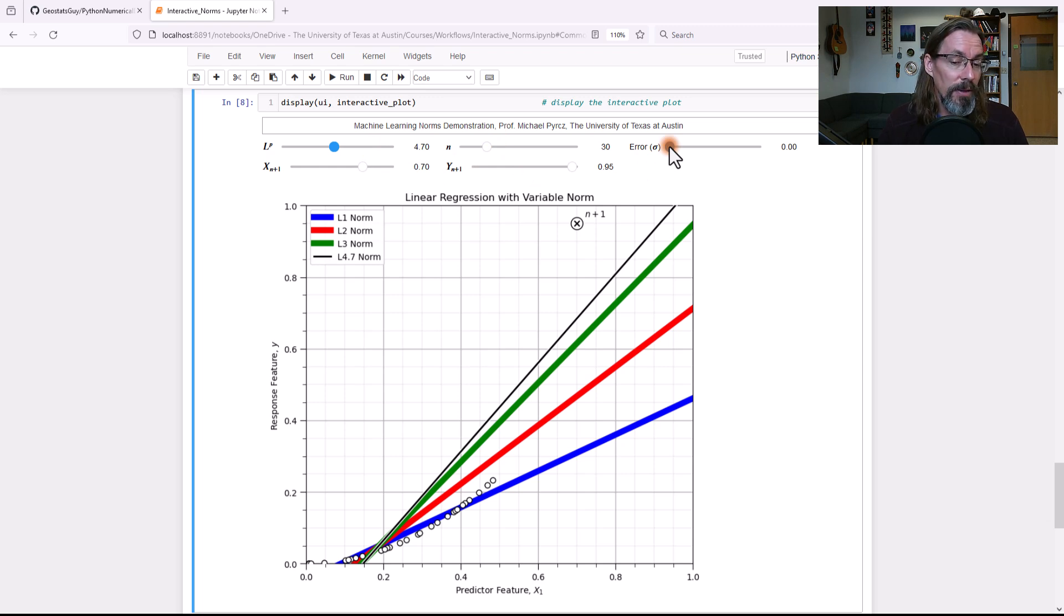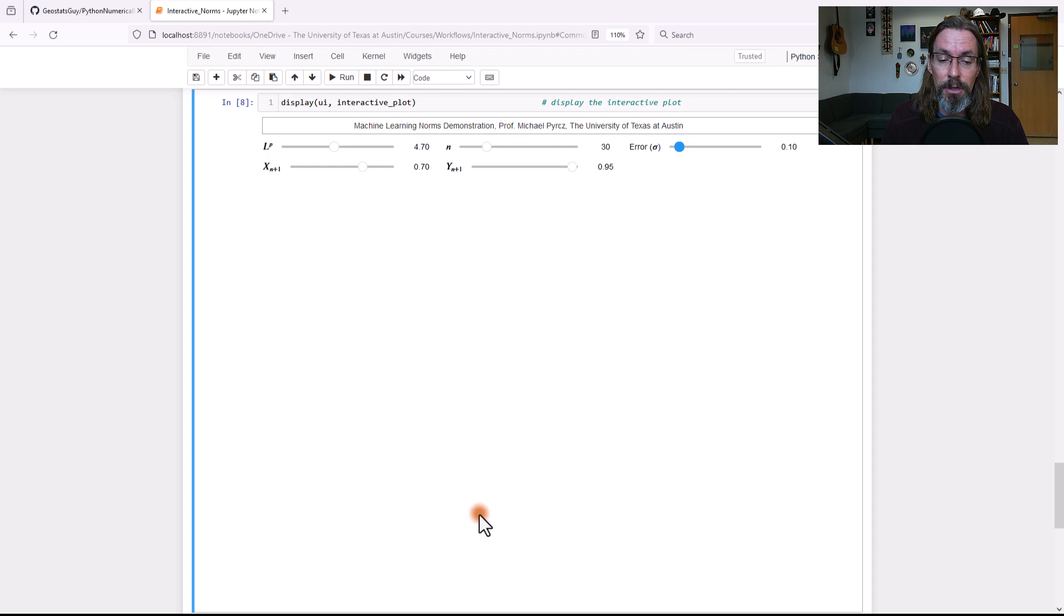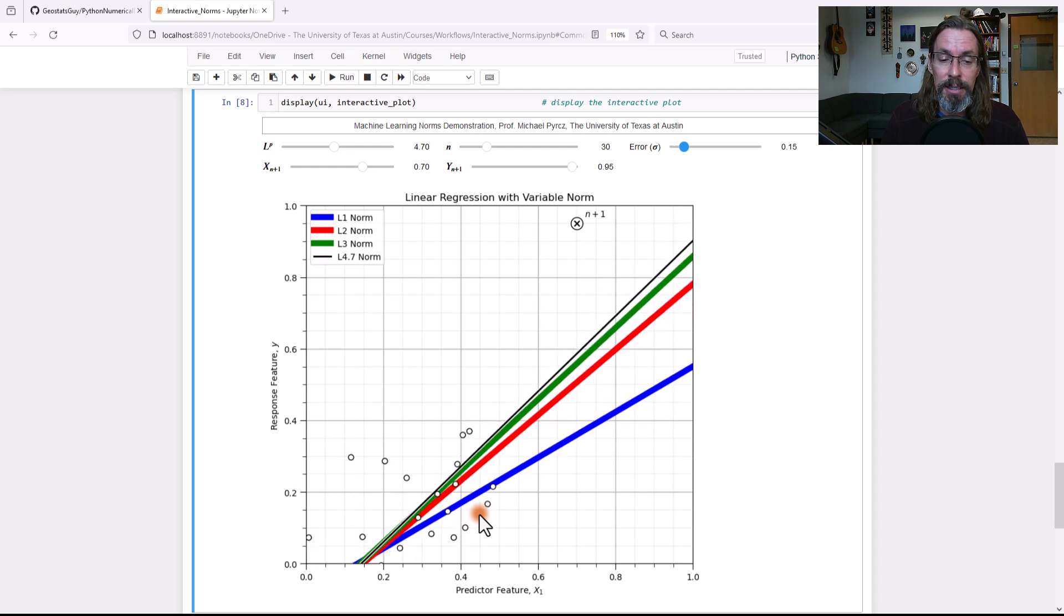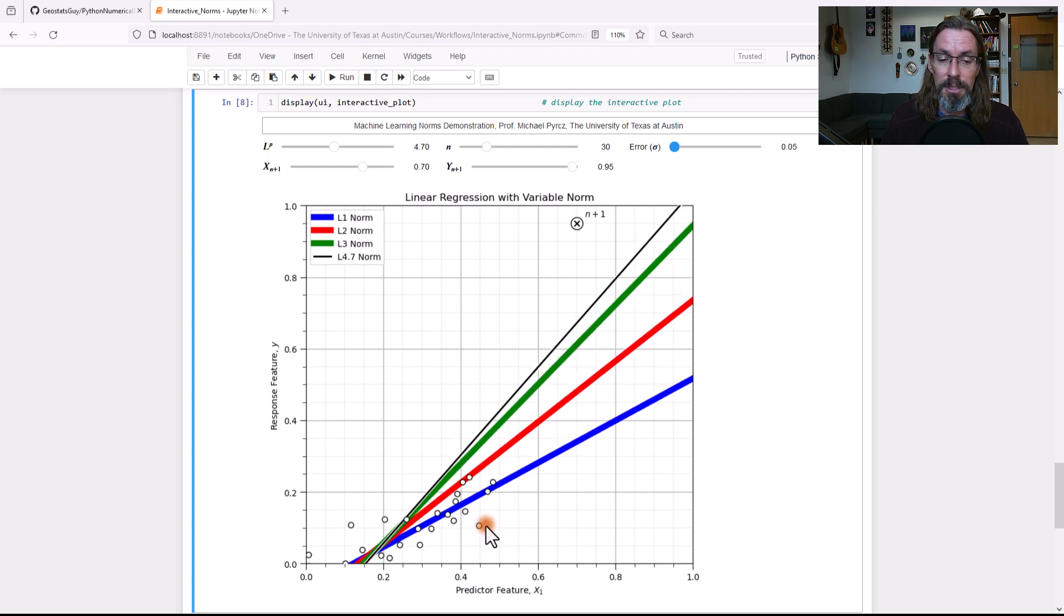And I gave you the opportunity to add some error to the data so you don't have that really nice, clean, quadratic signal in the data. So check that out. You can make some noise in the data and see how this affects the overall solution.